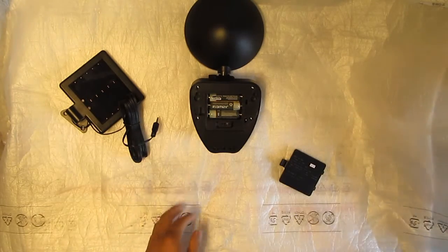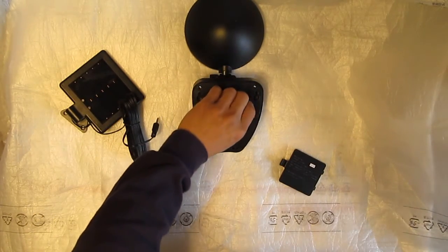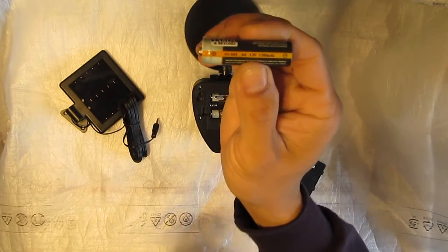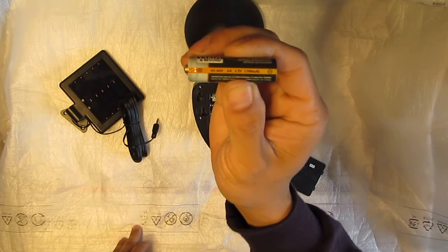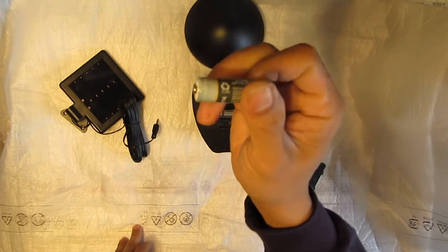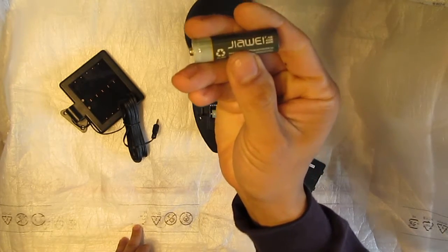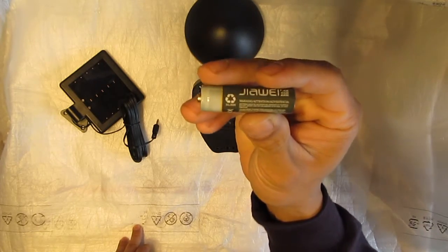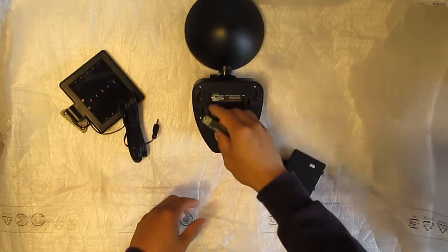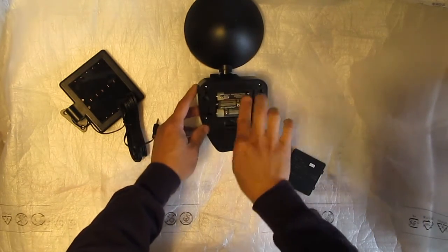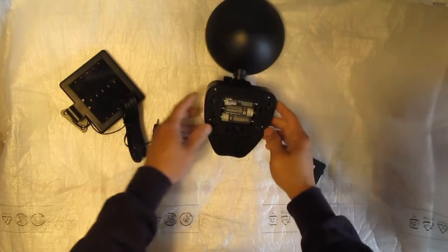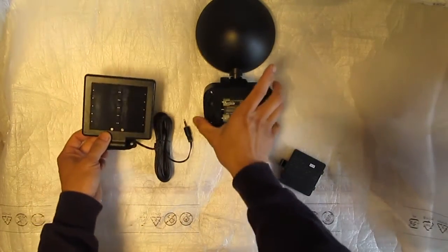Let me show you what it is: nickel metal hydride double A, 1.2 volts, 1500 milliamp. This is no-name, no brand name batteries. Yeah, it's Chinese made anyway. So it runs on three of these, and then let's take a look at the solar panel.